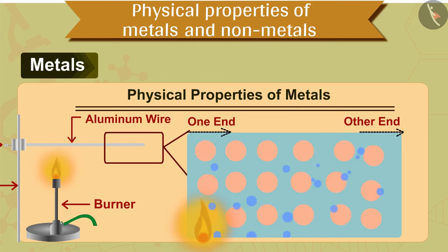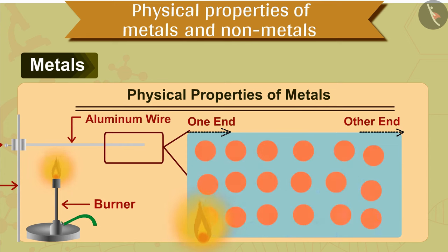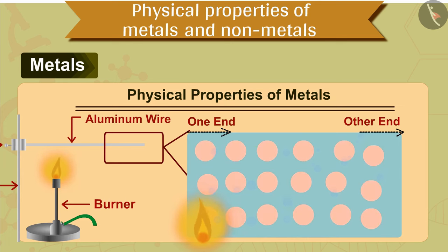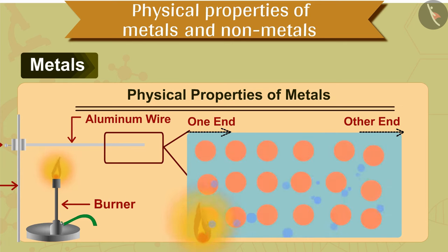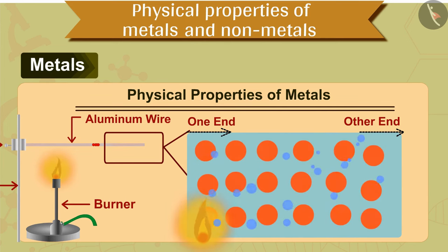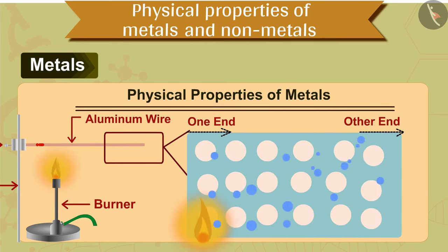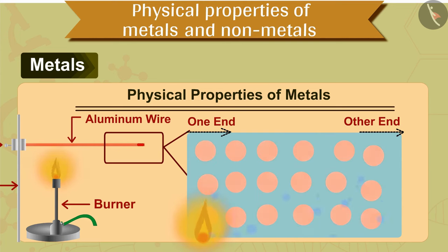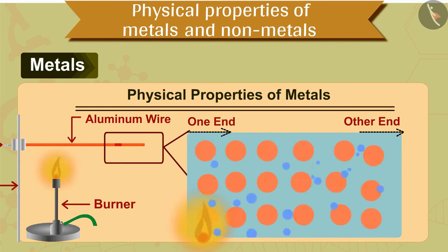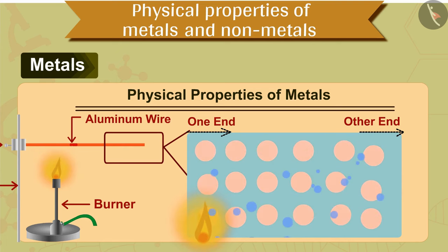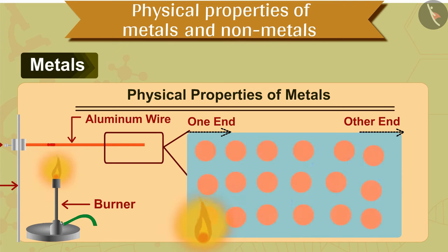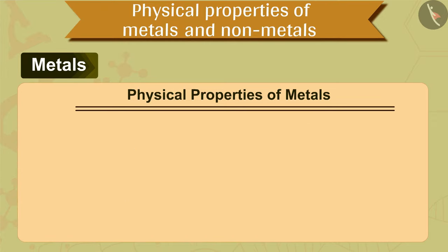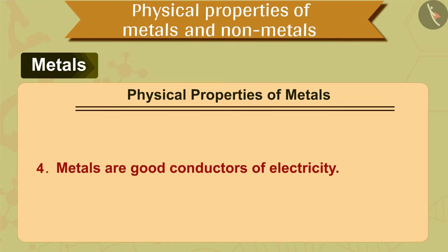But how did this become possible? How does heat reach from one end of the wire to the other? When a metal is heated, its atoms receive energy and vibrate at greater speeds. This energy is received by the electrons present in the atoms. These electrons move in the metal and provide energy to the other electrons and atoms. In this way, heat is conducted from one end of the metal to the other.